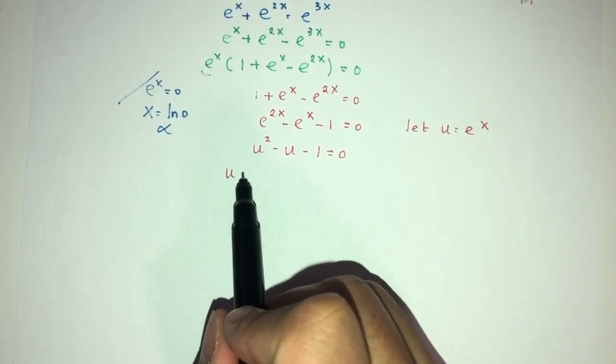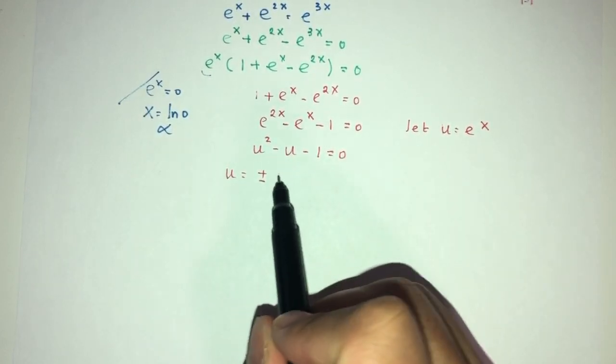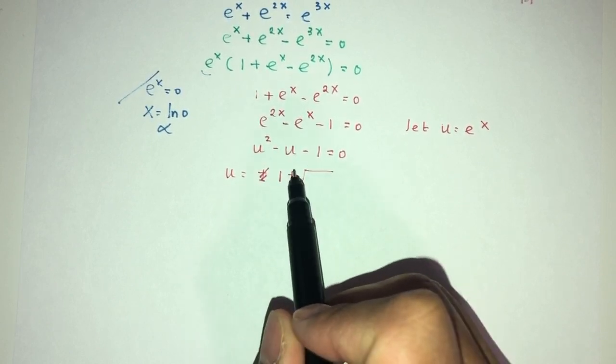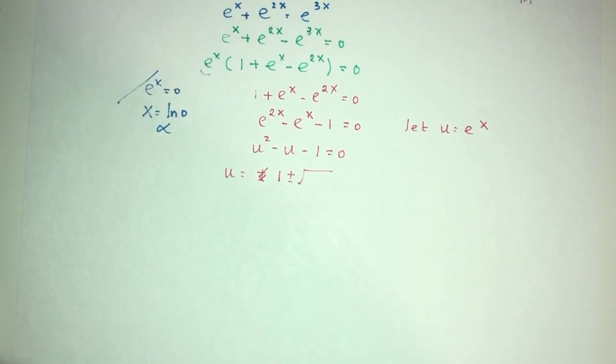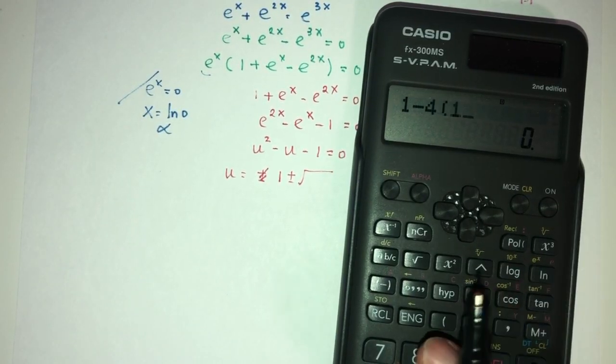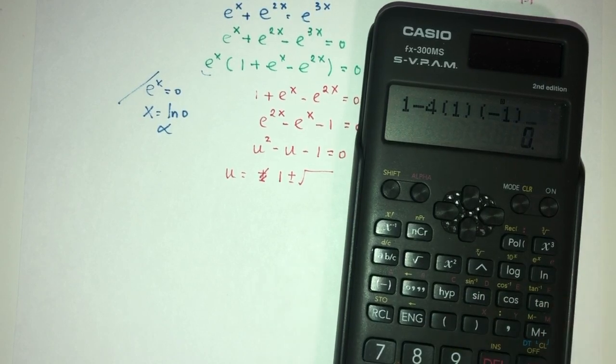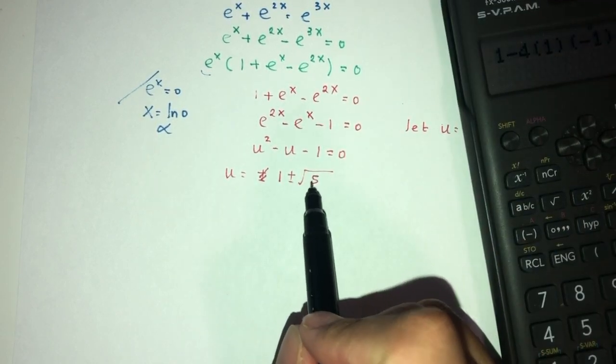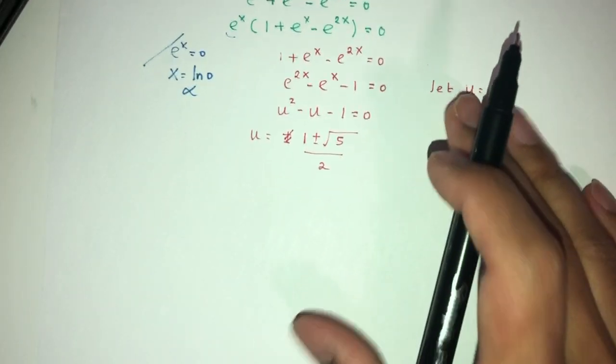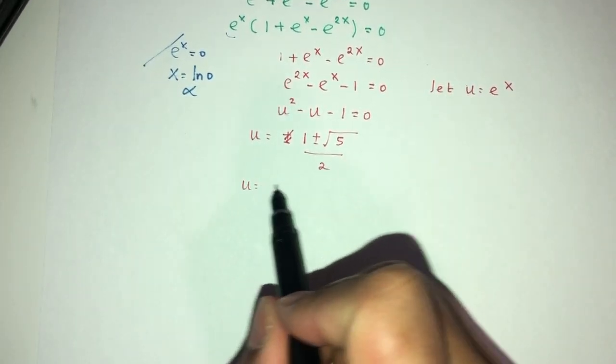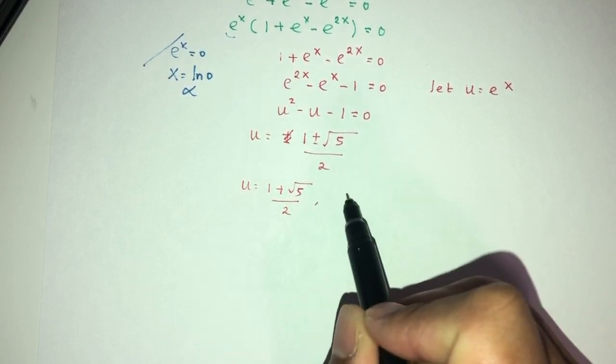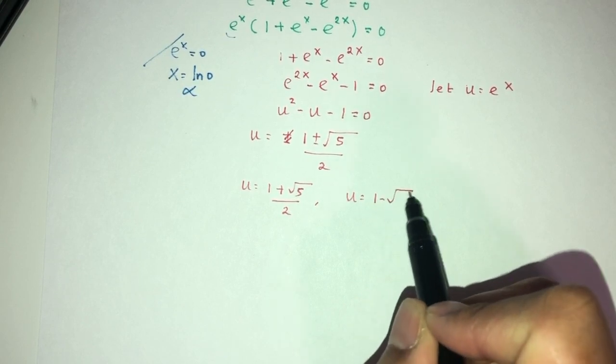Now, to find u, that will be plus minus... I'm sorry. Minus b first plus minus b square will be what? Let's see. b² will be 1 minus 4 times a times c. Now, it will be root of 5 and divide by the value of 2a. So, right now, we have two values. So, u is (1 + √5)/2. Or, u will be (1 - √5)/2.